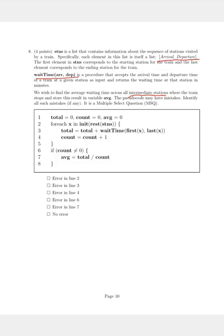So in the first line of the code, it's clear that the variables total, count, and average have been assigned the value zero.